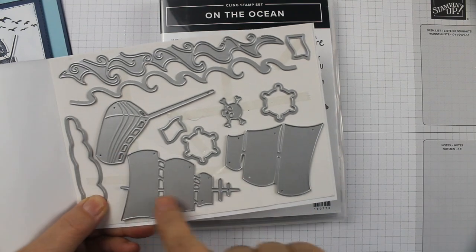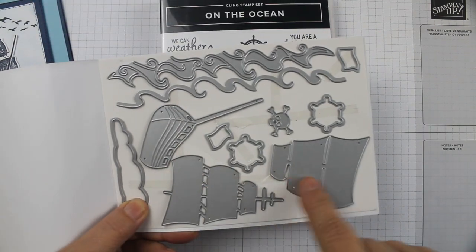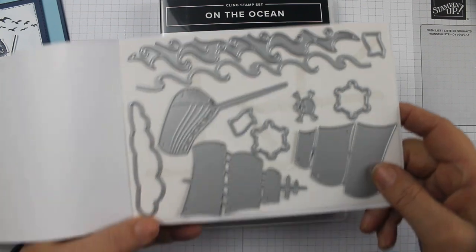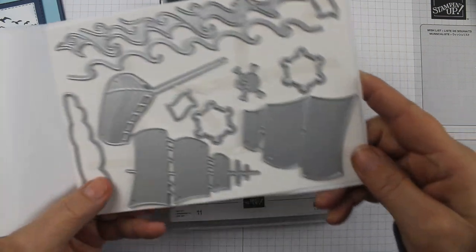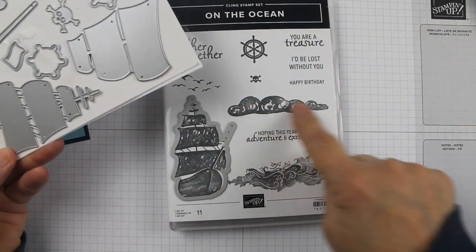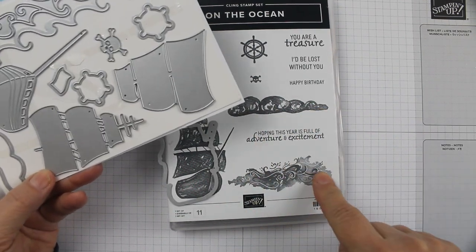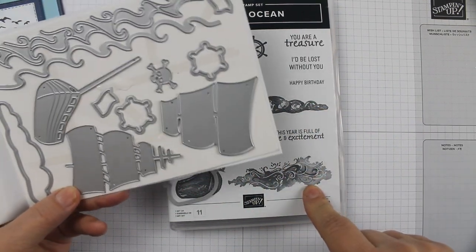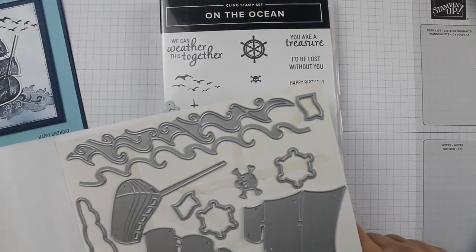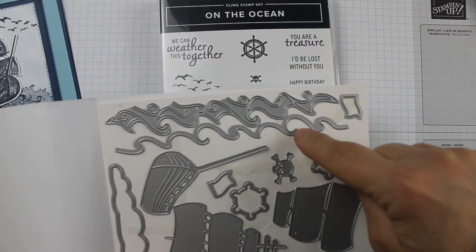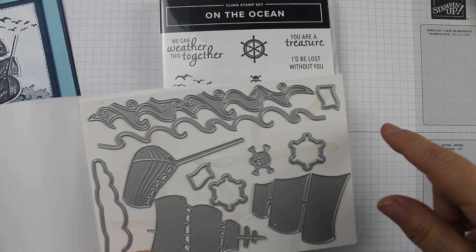And then you've got some that cut out waves. Then you can make your ship into a pirate ship and then there's the steering wheel for that. So this is a great little set to make all kinds of masculine cards and I just love it.